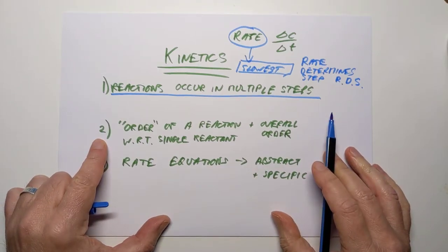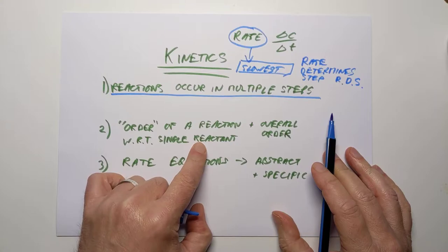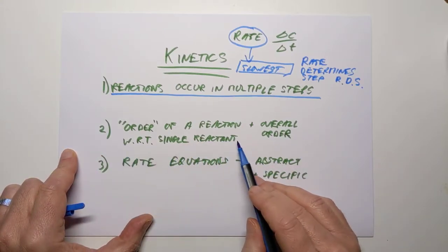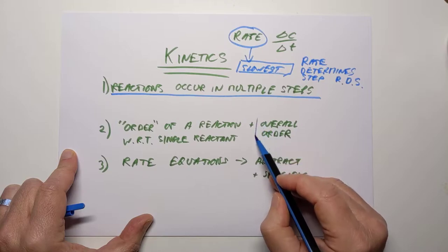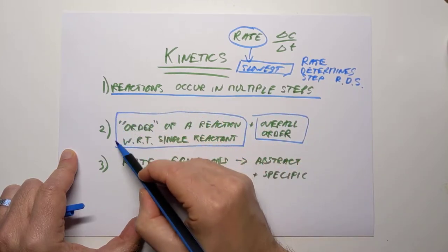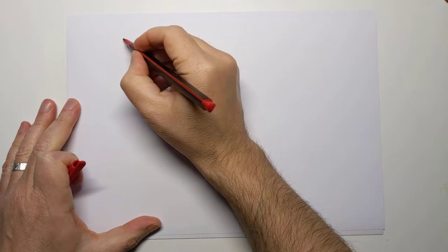Let's have a look at the order of a reaction with respect to a single reactant chemical. Once we've done the individual orders, we can work out the overall order for the whole reaction. This is probably easiest to define with an example. Let's define what the order of a reaction means in terms of the SQA's definition — I'm glad to say they've updated it to a mathematical definition.